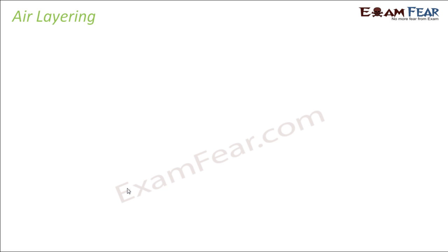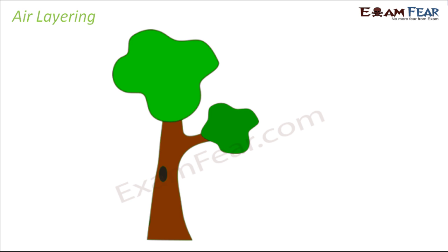The next method is air layering. In air layering, an aerial branch is scraped and covered with moist mud. An aerial branch is something which is in the air, not towards the soil. This part has been scraped and you cover it with moist mud. It is like doing a bandage with moist mud.